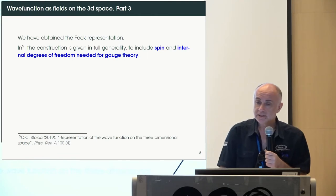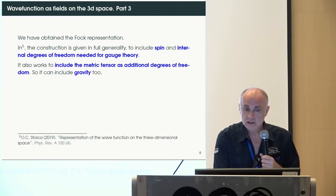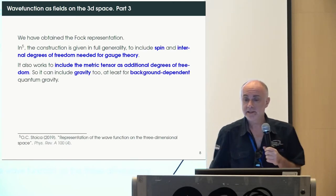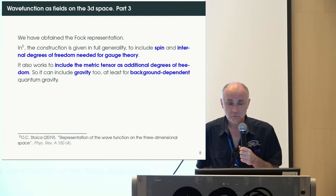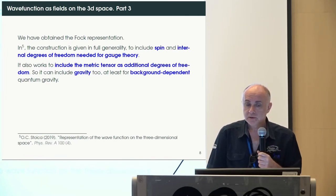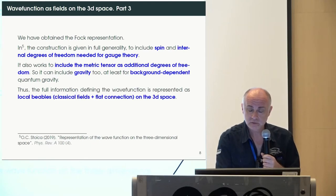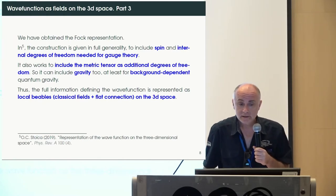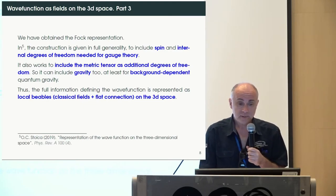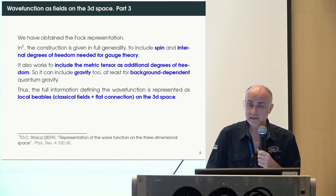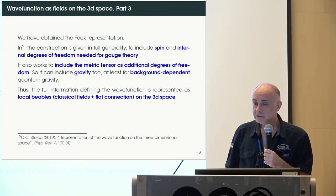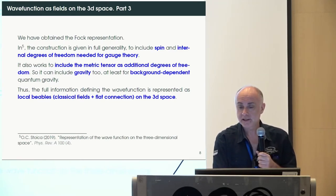The construction also included additional degrees of freedom like spin and internal degrees of freedom needed for gauge theory, and can include the degrees of freedom of the metric tensor — that is, gravity. In that case, the quantum theory of gravity represented this way requires the theory to be background-dependent. I claim this can be seen as local beables that contain the full information about the wave function — not only like reduced density matrices, but as classical fields with an infinite symmetry tracked by the flat connection. Both the vector field and the connection are classical fields, local on 3D space.